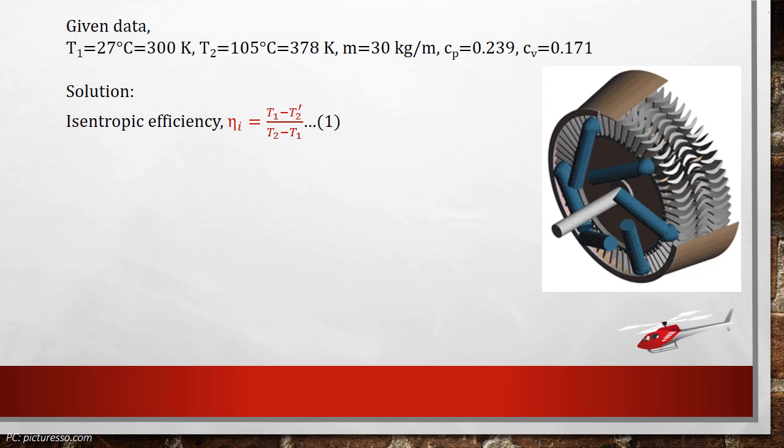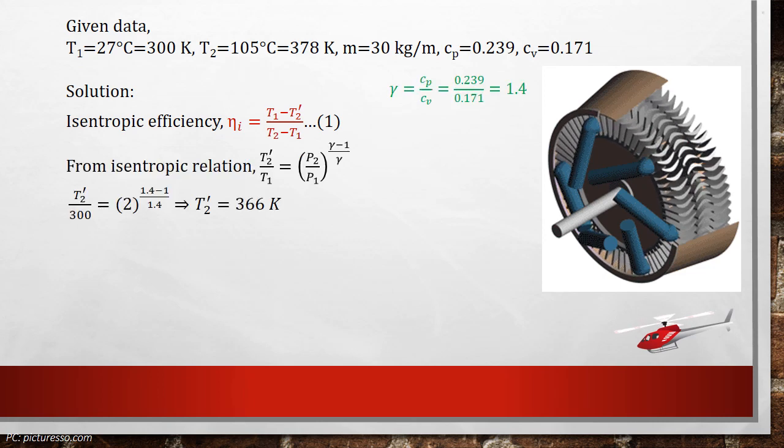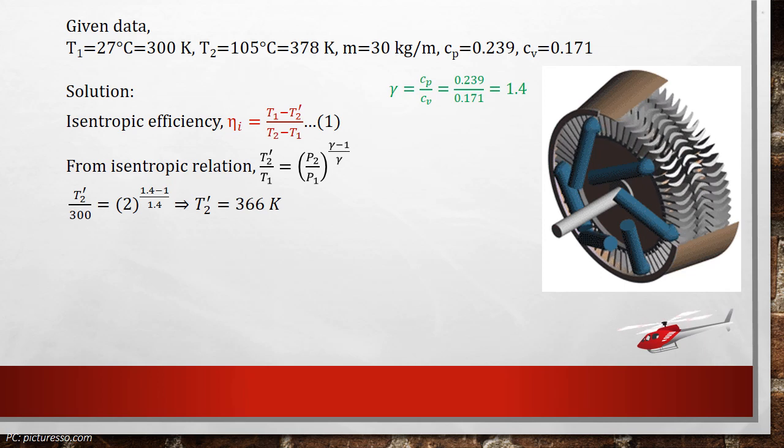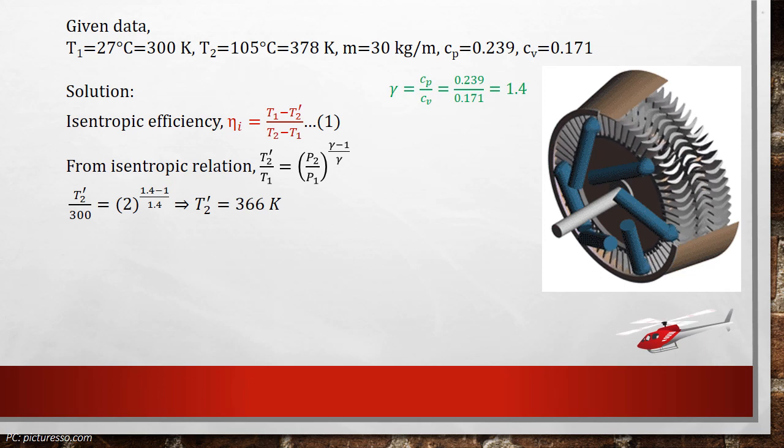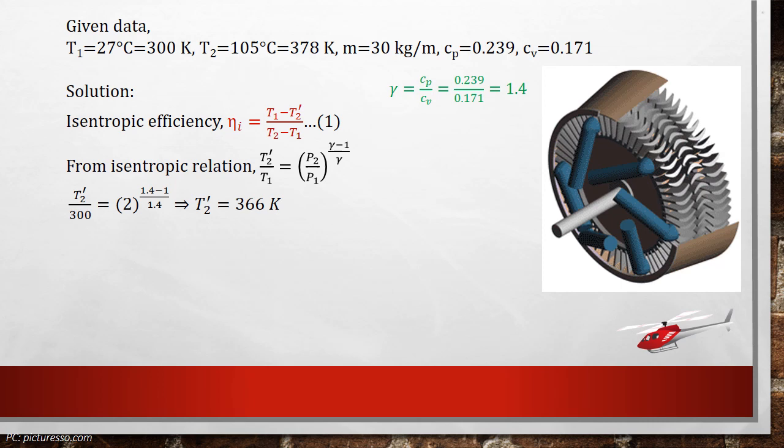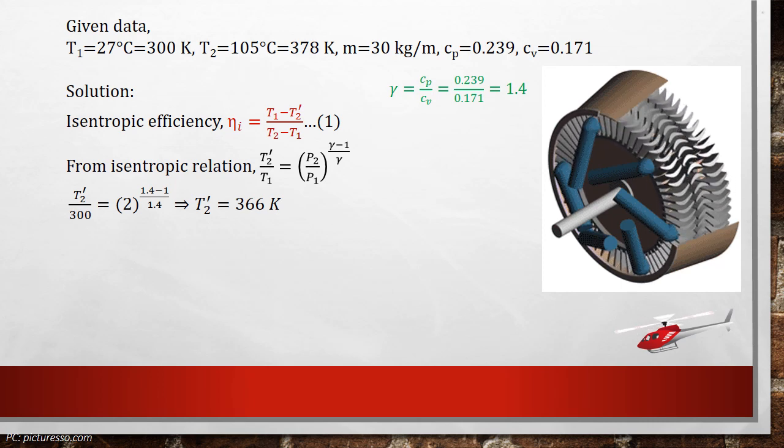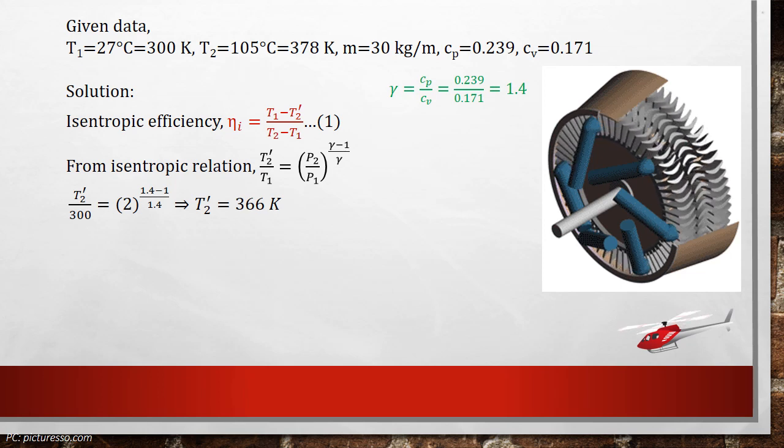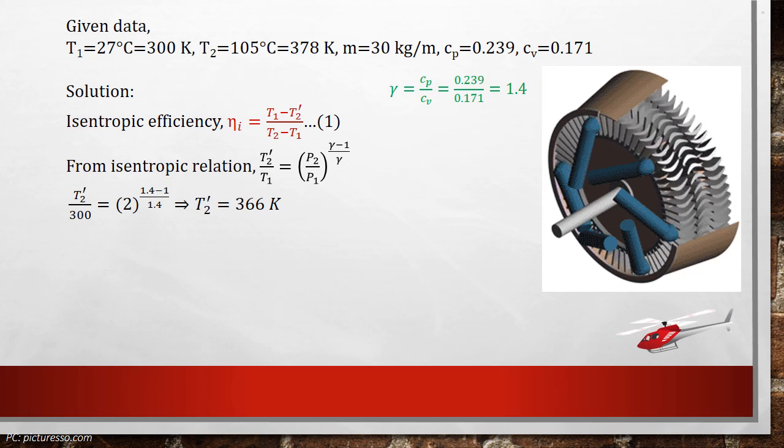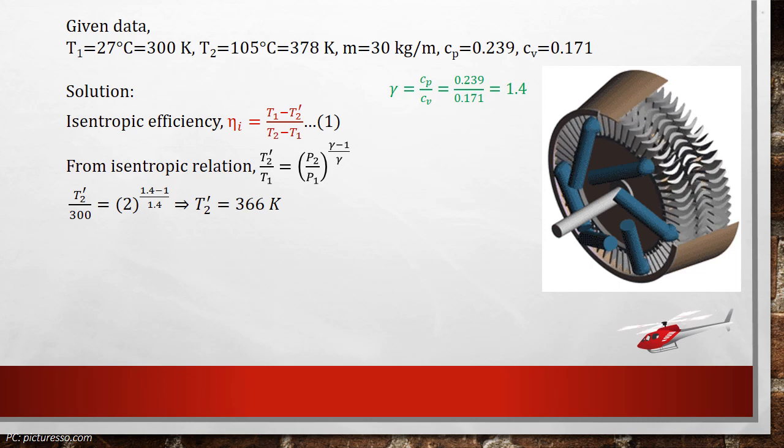From isentropic relation, we can find the static temperature. Then write T2' divided by T1 is equal to P2 divided by P1 to the power gamma minus 1 divided by gamma, where gamma is the heat capacity ratio. We know gamma is equal to C_P divided by C_V. Then gamma is equal to 1.4. In this question, the compressed pressure is doubled, so we can write pressure ratio P2 divided by P1 as 2.